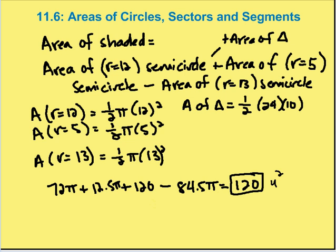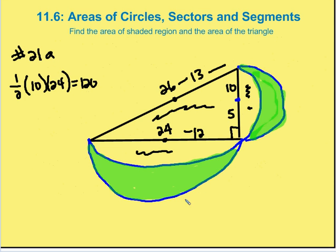This is why this is one of my favorite problems — you come up with a unique answer. The area of these two green shaded regions is exactly the same as the area of the triangle.